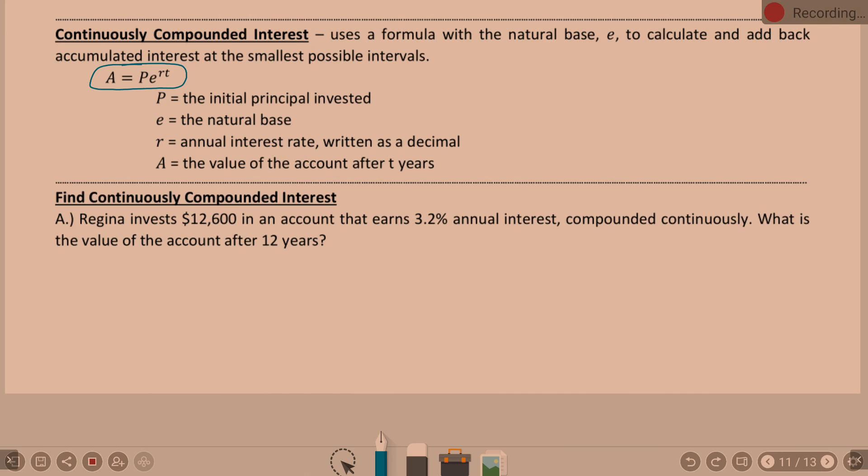We've got some same variables, some new variables. So, P is that initial principle still. That initial amount, it's still out front. E is the natural base. Little E is called a natural number. It's a number like pi. It's a number like pi in that it is irrational. It's a number that goes on forever, doesn't repeat, doesn't end. Pi is not the only one of those. We also have E. So, E is called the natural number. E is also a button on your calculator. Any scientific calculator is going to have any button. You just have to find it and know how to use it. R is still the annual interest rate written as a decimal, and A is still the value of the account after however many years.